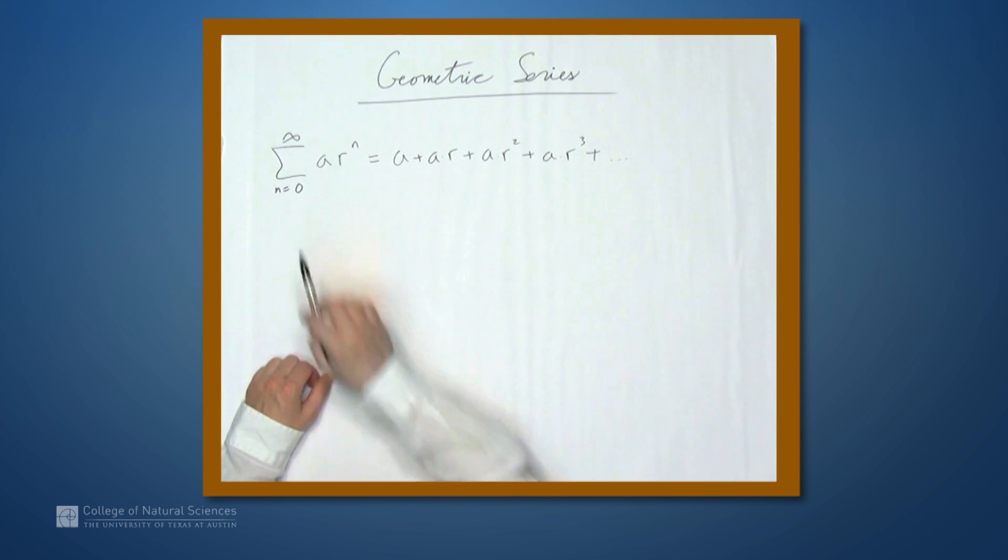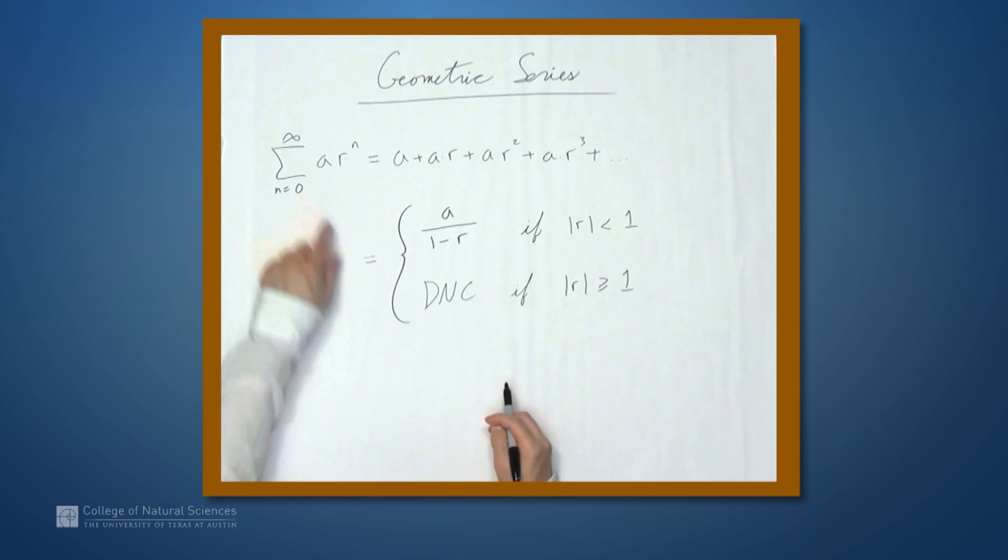All you need to know are a and r. So this thing equals a over 1 minus r as long as the absolute value of r is strictly less than 1. And if it's greater than or equal to 1, then this does not converge. So if the absolute value of r is greater than or equal to 1, this series doesn't converge. This means that this series converges to a over 1 minus r in the case that absolute value of r is less than 1, and it doesn't converge if it's greater than or equal to 1. So let's look at an example.